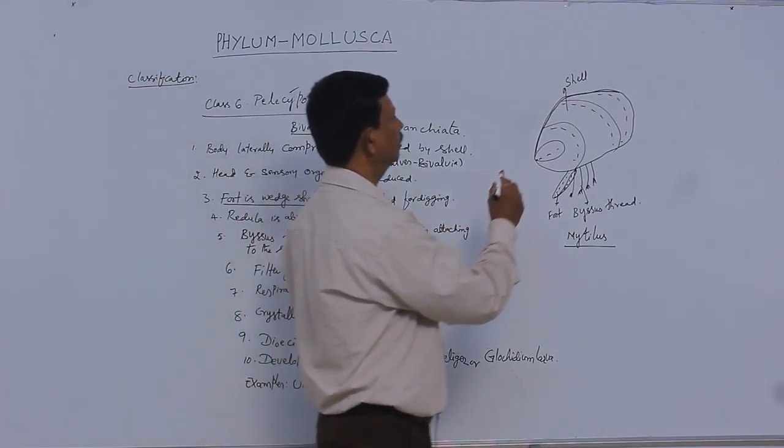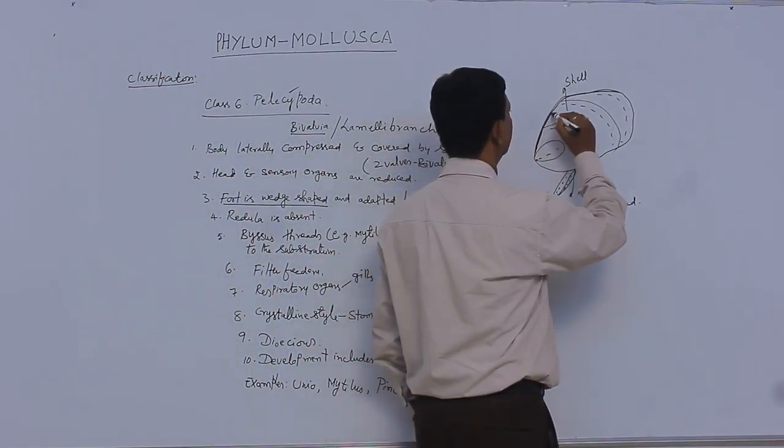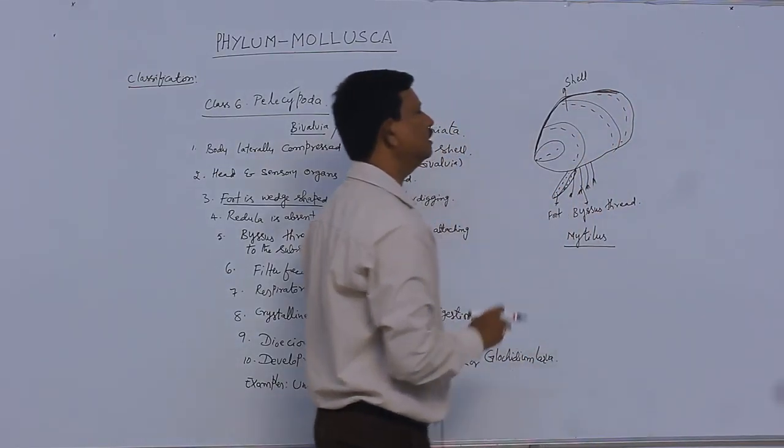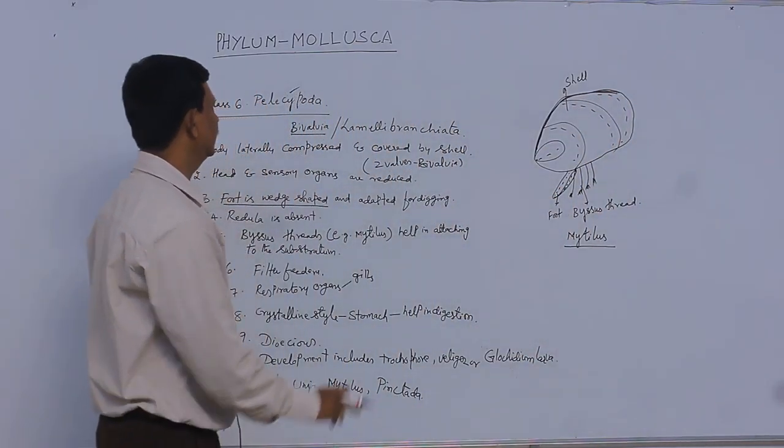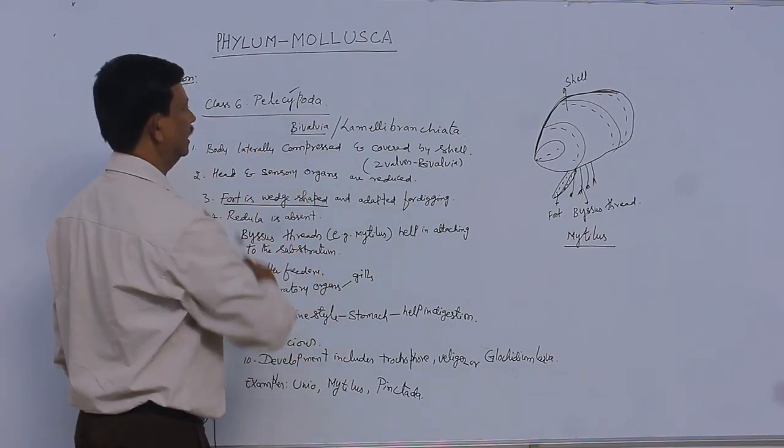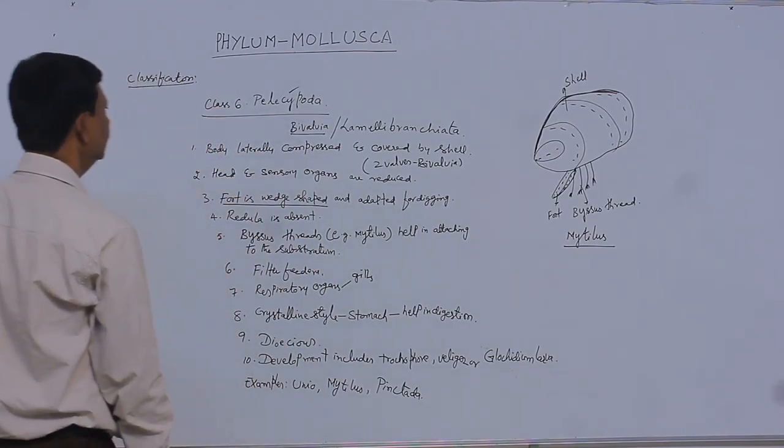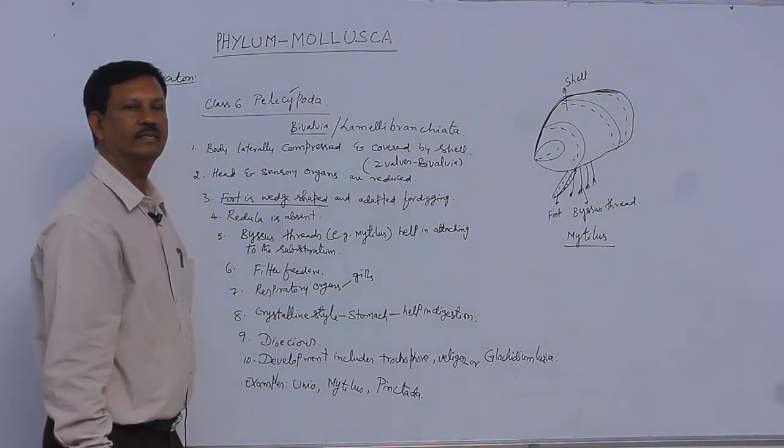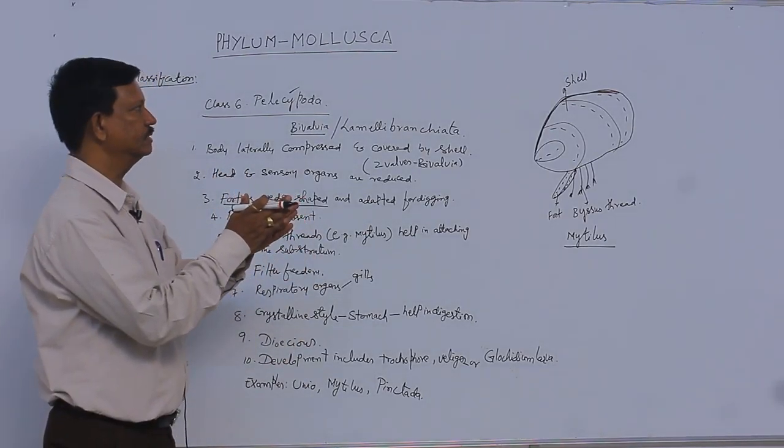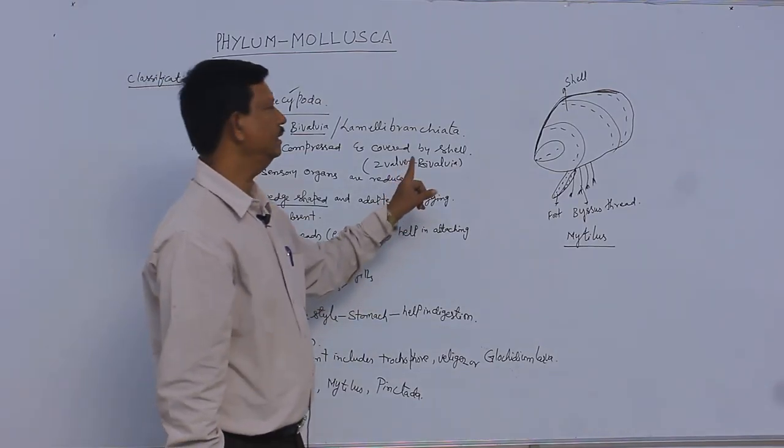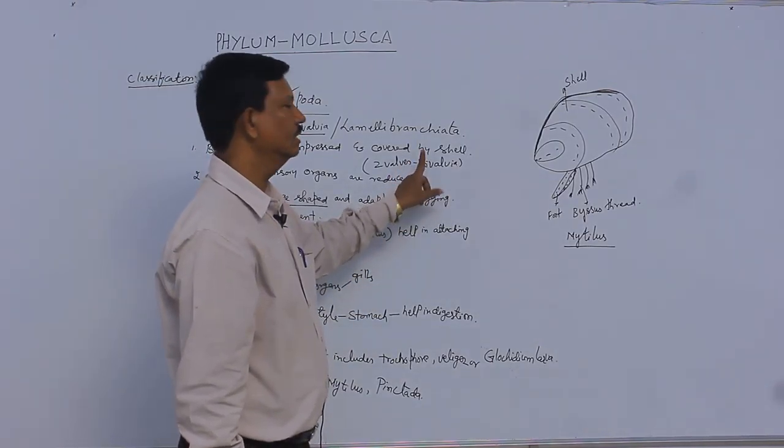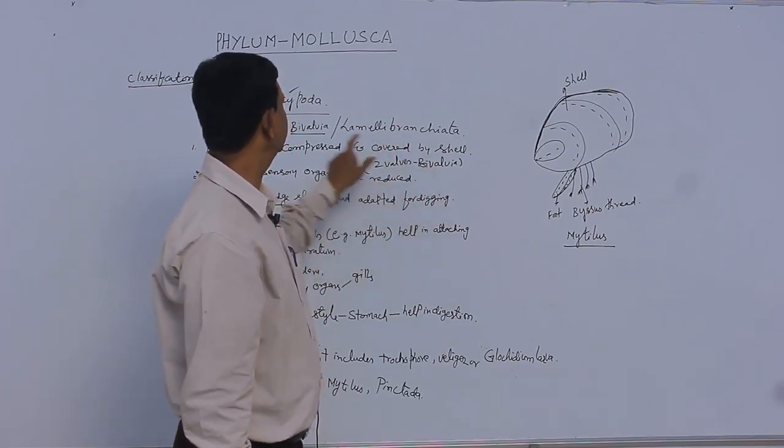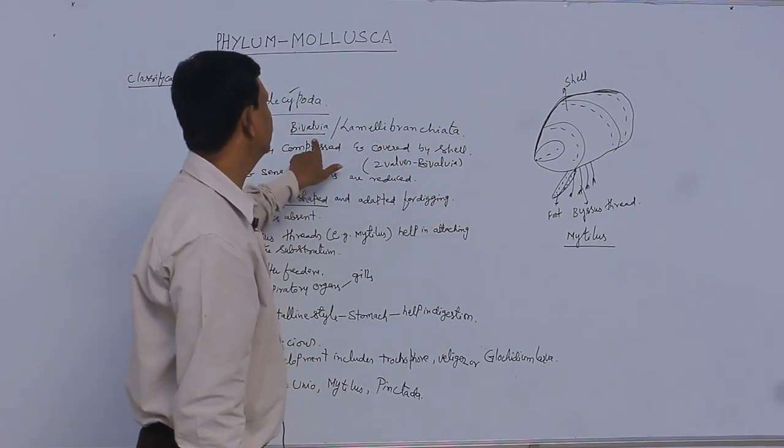Two valves are present, left and right side. Due to the presence of two valves, they are known as Bivalvia. The body is laterally compressed and covered by shells. The presence of two shells or valves is why they are commonly known as Bivalvia.